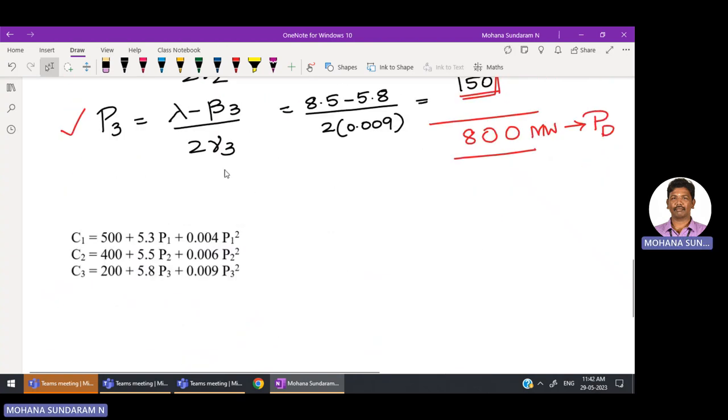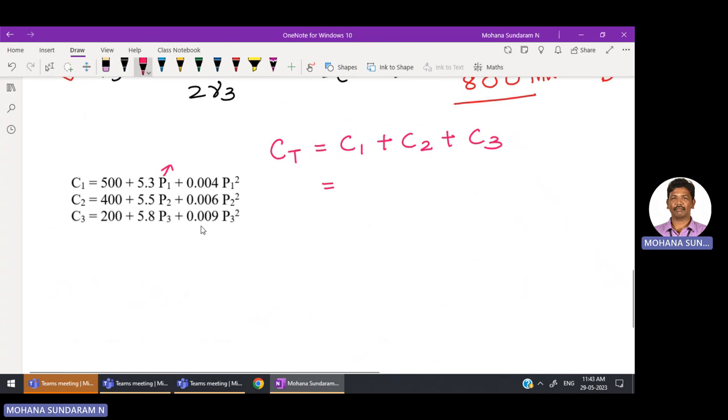In order to find the total operating cost, we have the equation. CT, total cost, is C1 plus C2 plus C3. Wherever you have P1, you substitute 400, P2 is 250, P3 is 150. Substitute and expand it, add all the three costs. You will be getting around 6682.5 dollars.